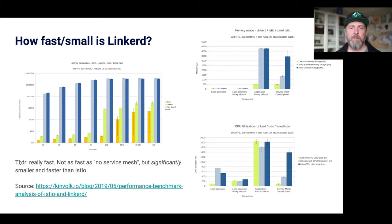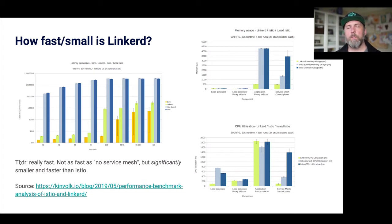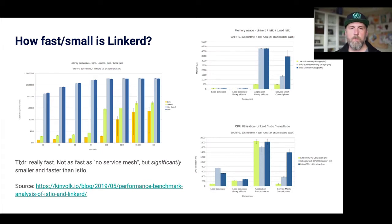We actually have a newer version of these benchmark numbers. Unfortunately, that newer version was not available in time for me to record this. But if you search for Kinvoke Linkerd benchmarks, you should find a whole bunch of open source benchmark frameworks and results talking about how expensive it is to run Linkerd. It's more expensive than not having a service mesh, but it is a lot faster and a lot smaller than other service mesh alternatives. Istio is the one we like to pick on because that's the one that everyone knows about — Linkerd is much, much faster and much, much smaller.